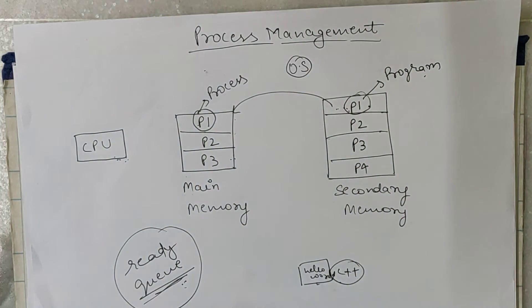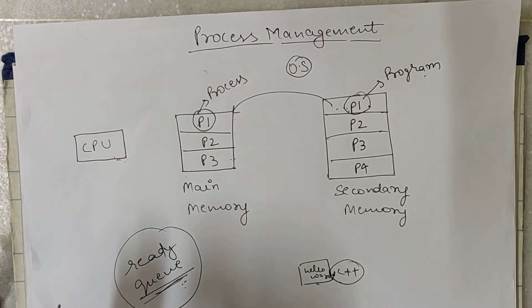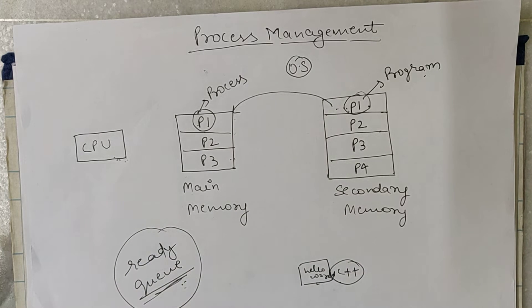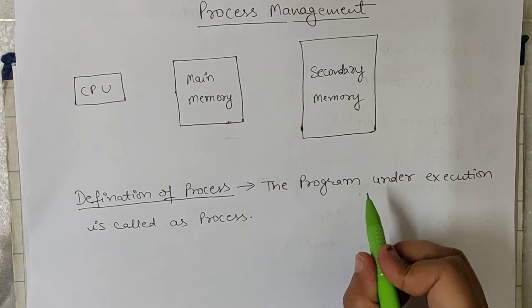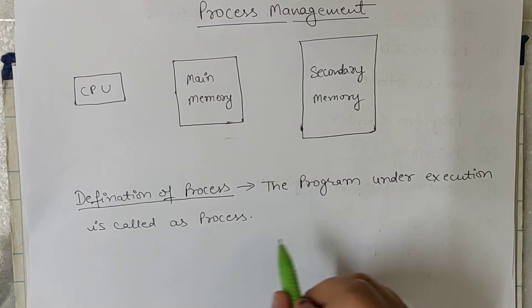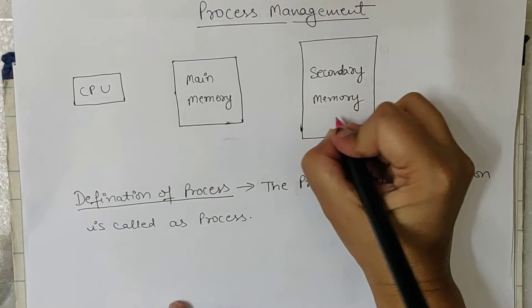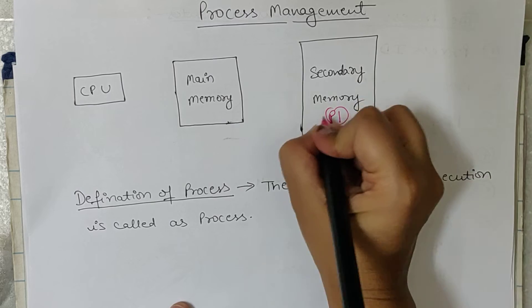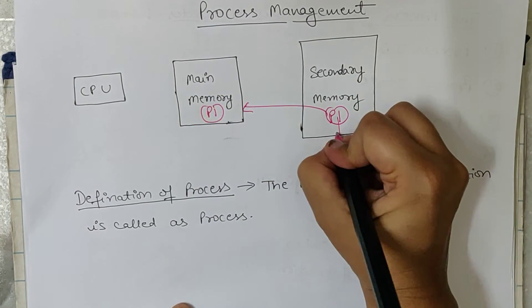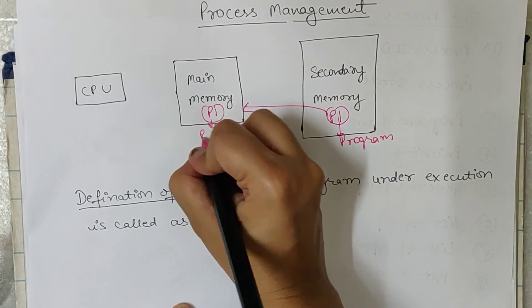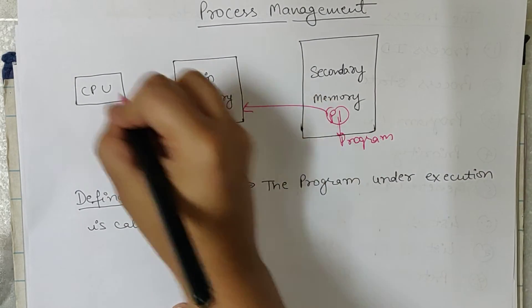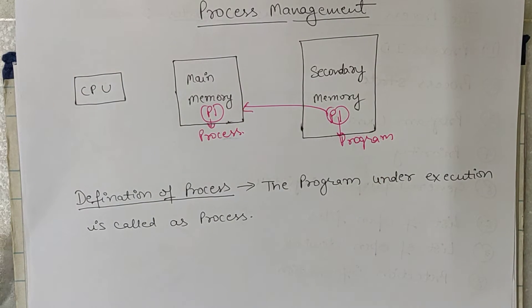This is just a gist of process management — we will discuss it in detail. The formal definition of a process is: a program under execution is called a process. Program P1, when it moves inside the main memory, becomes a process. Once it is moved from secondary memory to main memory, the CPU picks this process and executes it.